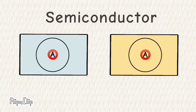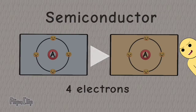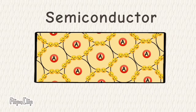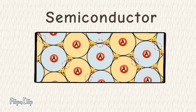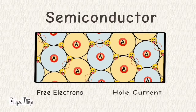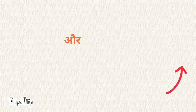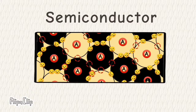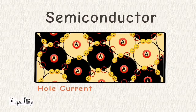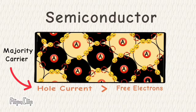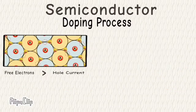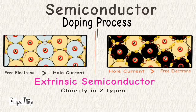Jab is semiconductor ke andar pentavalent impurity ko add kiya jata hai, tab us semiconductor mein electricity ka flow bahut badh jata hai — kyunki hole current ke tulna mein free electrons ka sankhya zyada rehta hai. Isliye free electrons ko majority carrier aur hole current ko minority carrier kaha jata hai. Aur jab trivalent impurity add ki jati hai, tab hole current majority carrier ban jata hai aur free electrons minority carrier. Is doping process ke upar nirbhar karke extrinsic semiconductor ko do type mein classify kiya jata hai: ek hai n-type semiconductor aur doosra hai p-type semiconductor.